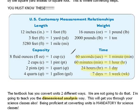Some things we may not know off the top of our head are capacity measurements. There are eight fluid ounces in a cup, two cups in a pint, two pints in a quart, and four quarts in a gallon. We have to know these.